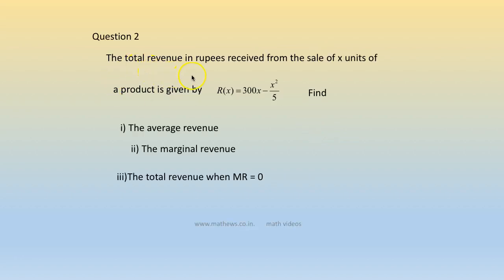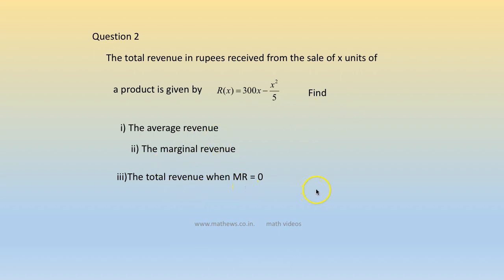Question 2: the total revenue in rupees received from the sale of x units of a product is given by r(x) = 300x - x²/5. Find the average revenue, the marginal revenue, and the total revenue when marginal revenue is 0.